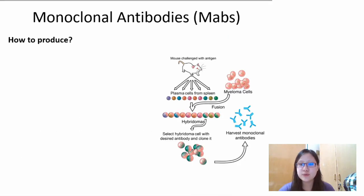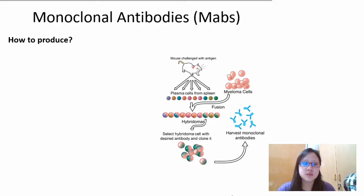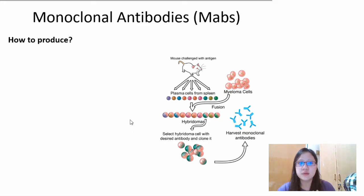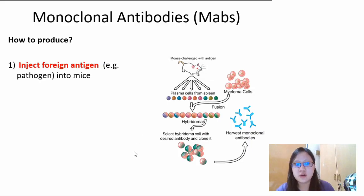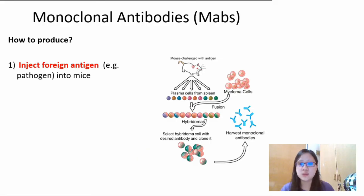So how do you produce these from scratch? What you need is a mouse or a small mammal, and the antigen you want the antibody to be specific to — it could be a pathogen, it could be something else. The first step is to inject the foreign antigen, for example a pathogen, into the mouse.